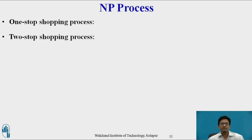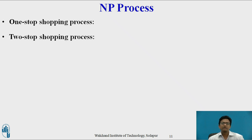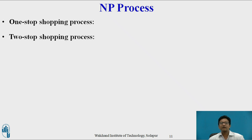The NP process involves either a one-stop or two-stop shopping process. In the one-stop shopping process, the customer only needs to contact the recipient operator and authorize that operator to handle the porting. In the two-stop shopping process, the customer first requests the existing mobile operator to cancel the contract and generate a porting authorization code; in the second step, the customer applies for a new contract with the new operator and asks them to port the number using that porting authorization code.